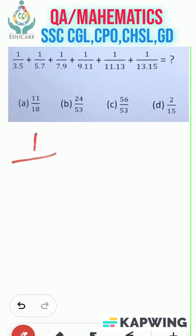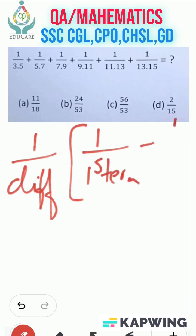The formula would be 1 by difference into 1 by first term minus 1 by last term. If you want, you can take a screenshot of the formula.